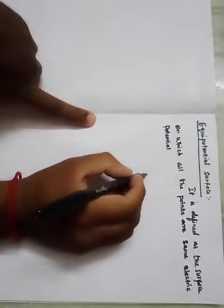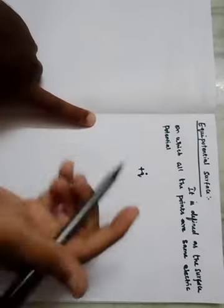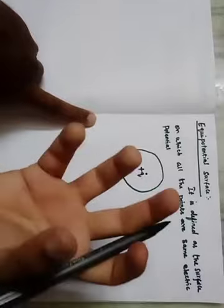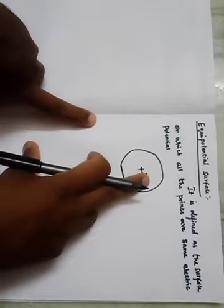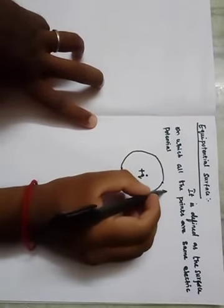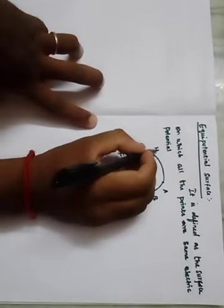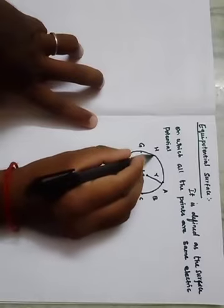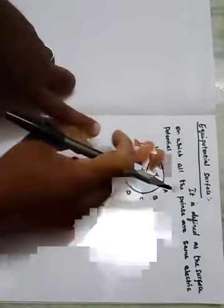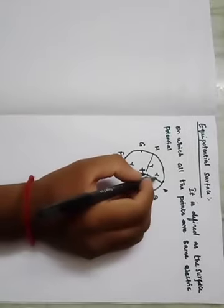For a point charge, the equipotential surface is considered as a concentric sphere. In a note I can draw the diagram in two dimensions only, but you can understand that in three dimensions it is a sphere. In this sphere we consider points A, B, C, D, E, F, G, H — all having the same radius R, so all points at the same radius have the same electric potential.